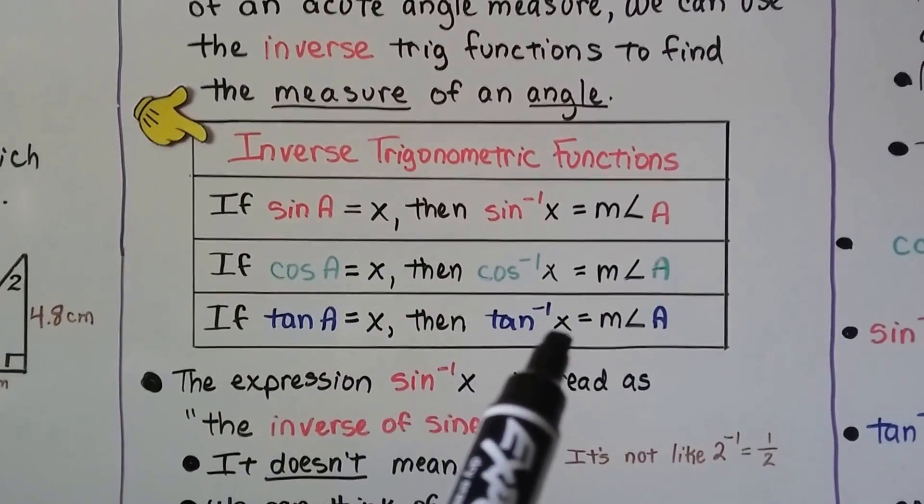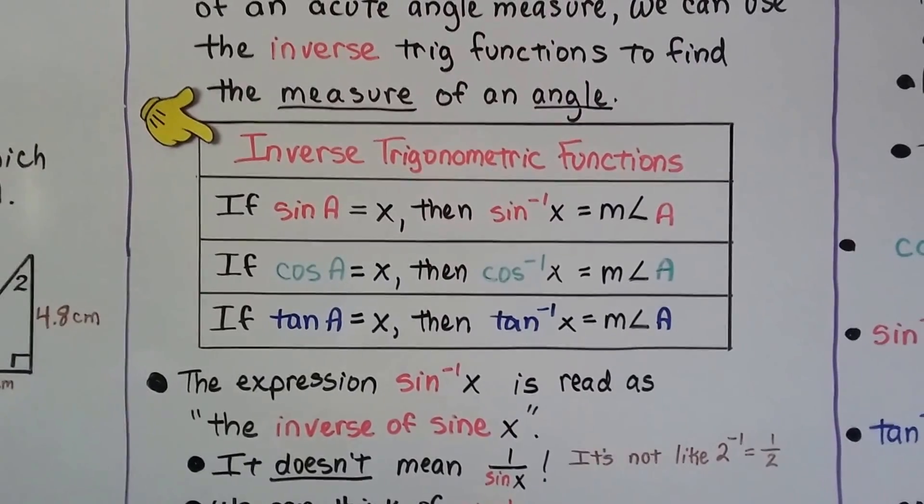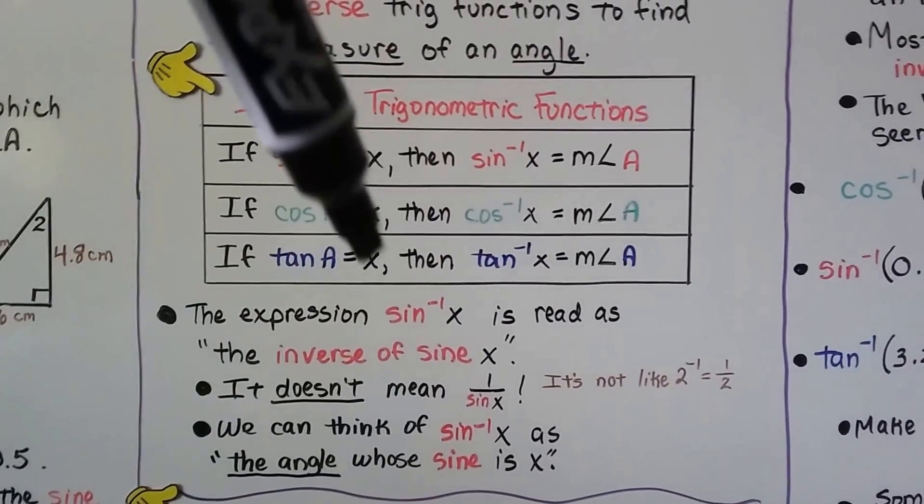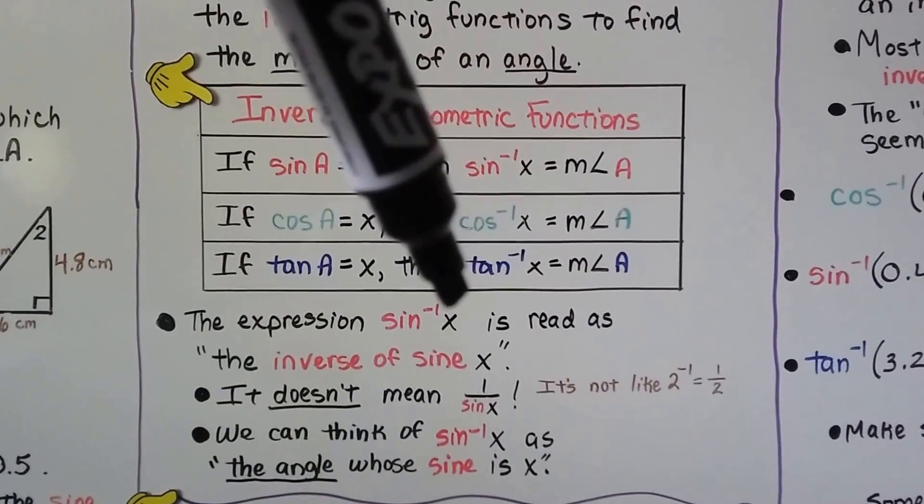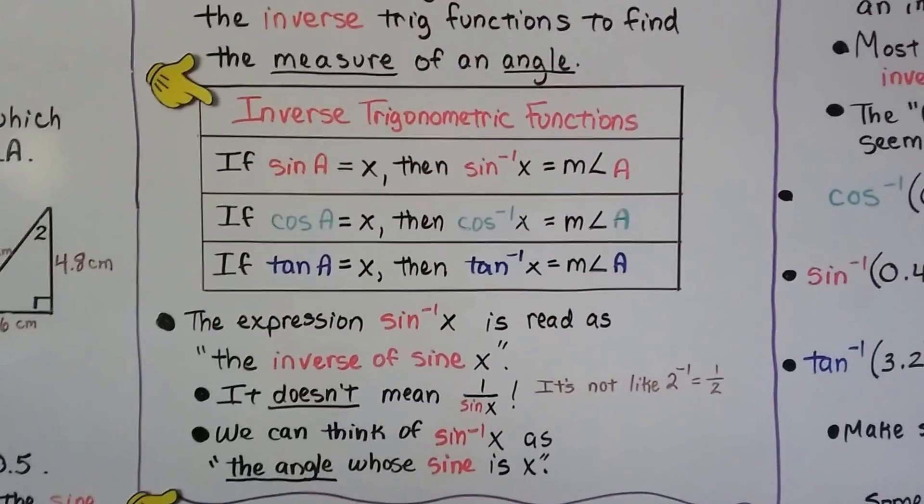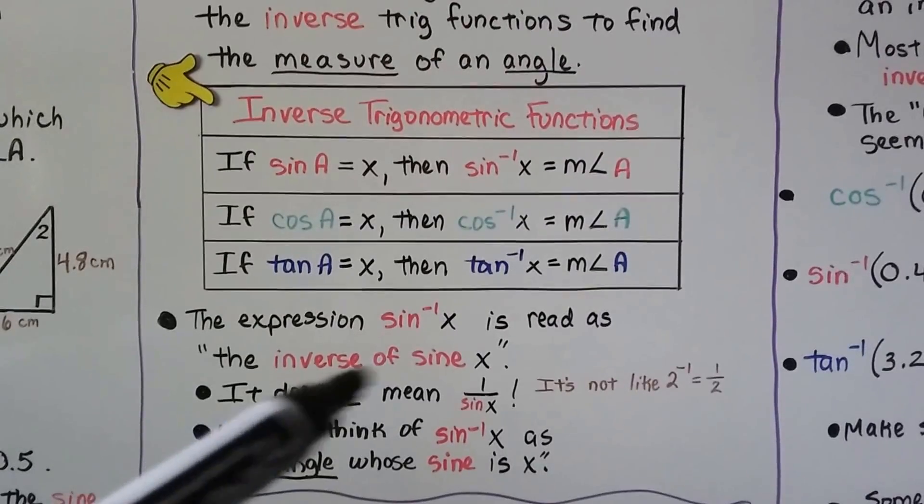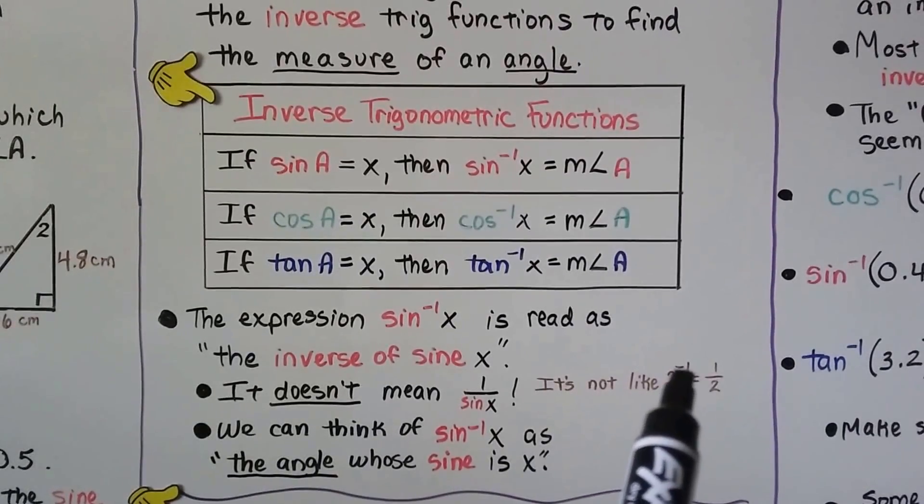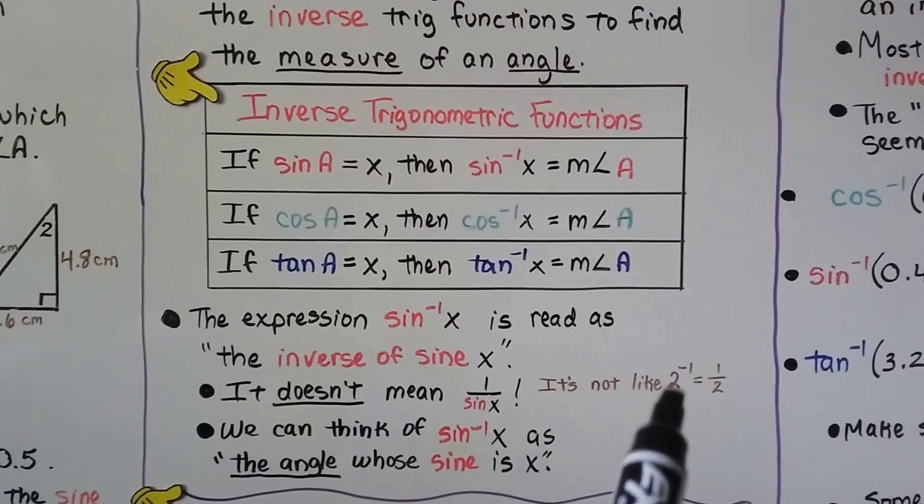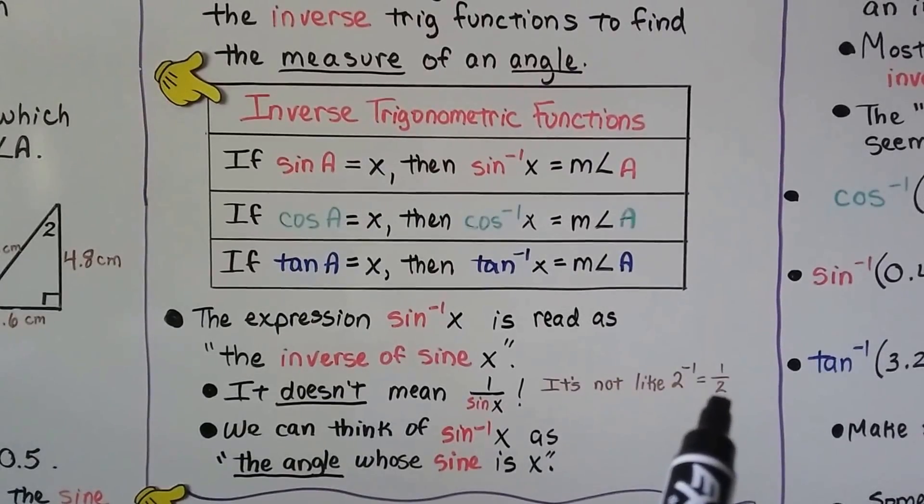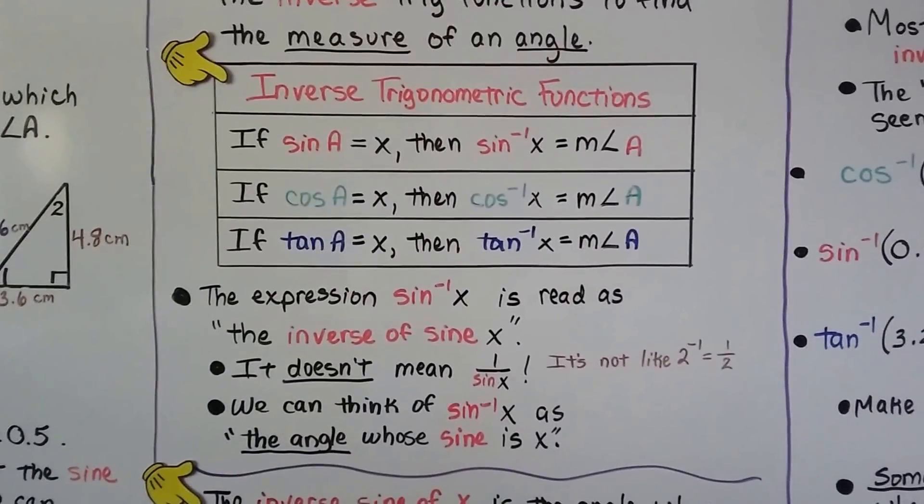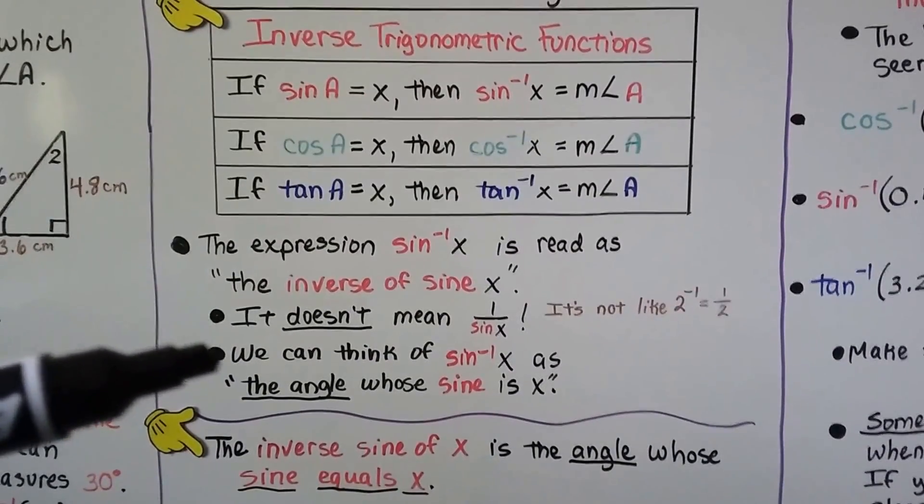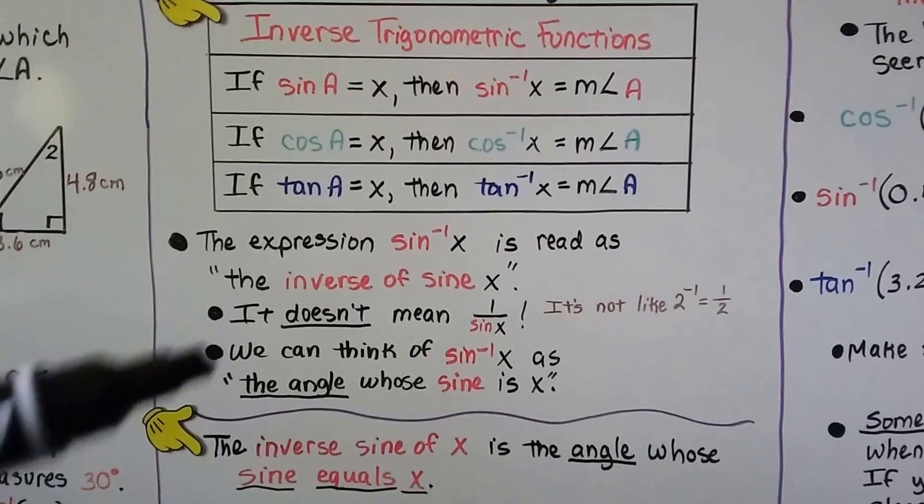If you're confused, stick with me. The expression sin with the little negative 1 x is read as the inverse of sine x. And it doesn't mean 1 over sine of x. I know in algebra we learned if we had a negative exponent for a number, we could write it as a fraction. This is not the same thing.